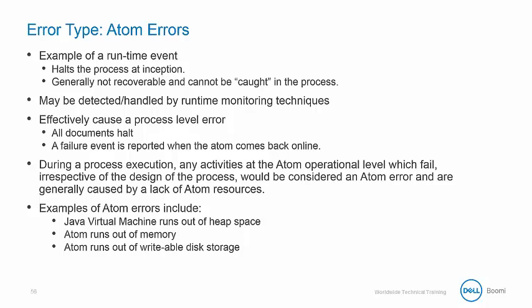The third type of error is the atom error. A runtime event is one that will halt the process at inception, and these errors are not recoverable or caught in the process. They effectively cause a process-level error. All document processing is halted and a failure event is reported once the atom comes back online. During a process execution, any activities at the atom operational level that fail — irrespective of the design of the process — would be considered an atom error and generally would be caused by a lack of atom resources. Examples include the JVM running out of heap, an atom that is out of memory or writable disk space, or if the server is disconnected.